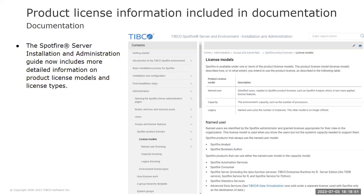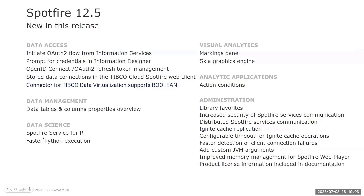We believe that including more and more information as part of the main documentation provides more clarity and better visibility. So, what is Spotfire 12.5? It provides you with quicker access to your favorite items in the library, enables the execution of data functions using the open source R programming language leveraging the R data science ecosystem, simplifies authentication and authorization workflows for external data sources, and in addition has a number of features and enhancements to provide increased speed, robustness, security, and troubleshooting of Spotfire services.